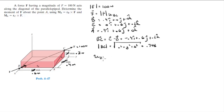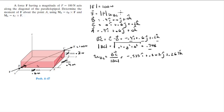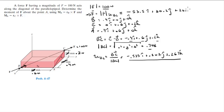The unit vector BC is given by vector BC divided by its magnitude. Once you divide the three components by the magnitude, the unit vector BC comes out to be −0.535i + 0.802j + 0.267k. Going back, the Cartesian vector form of F is the 100 N magnitude times each component of the unit vector, giving F = −53.5i + 80.2j + 26.7k Newtons.